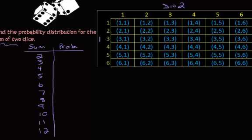You can see here, we can get a sum of 2 right here, and no other place. So the probability would then be 1 out of 36.